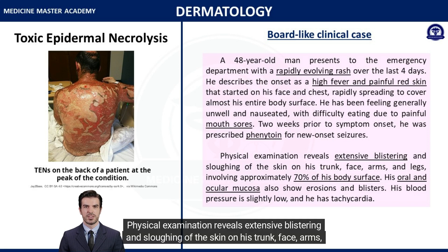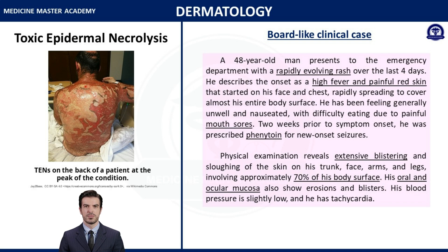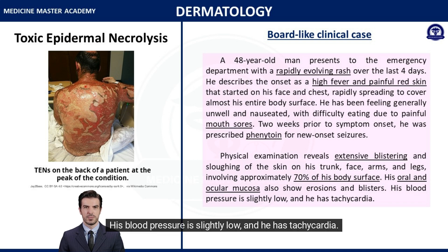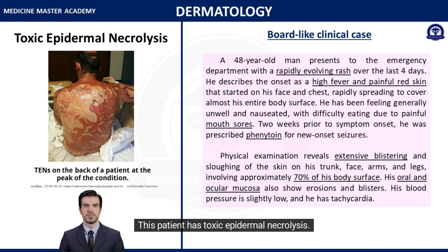Physical examination reveals extensive blistering and sloughing of the skin on his trunk, face, arms, and legs, involving approximately 70% of his body surface. His oral and ocular mucosa also show erosions and blisters. His blood pressure is slightly low, and he has tachycardia. This patient has toxic epidermal necrolysis.